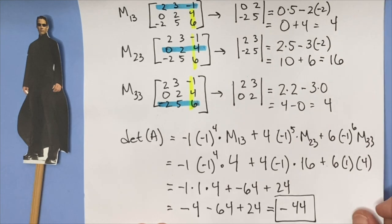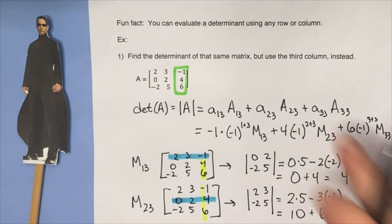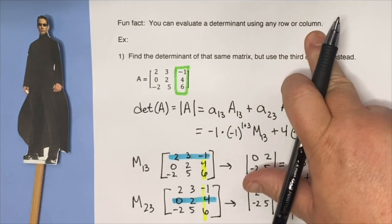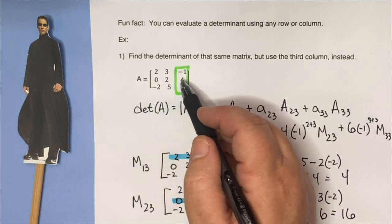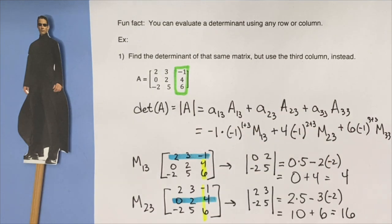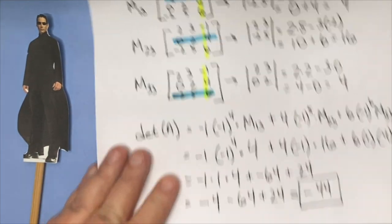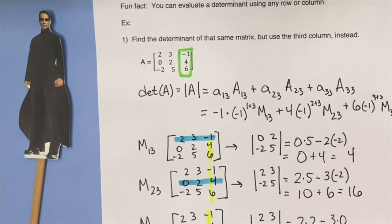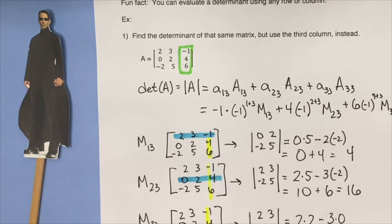So what did we learn? We learned that you can pick any row or column to evaluate a determinant. So instead of using the first row, which is what we did in the last video, we used the last column and got the same value. This is interesting because I can think, how could I make good use of a zero?